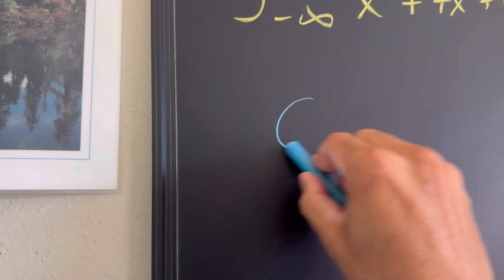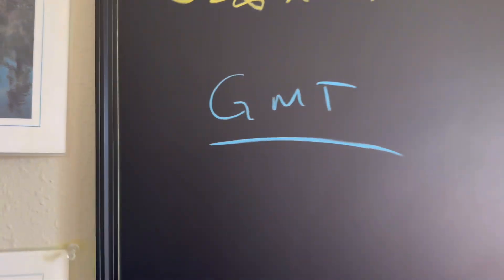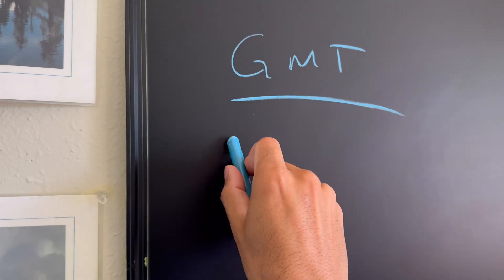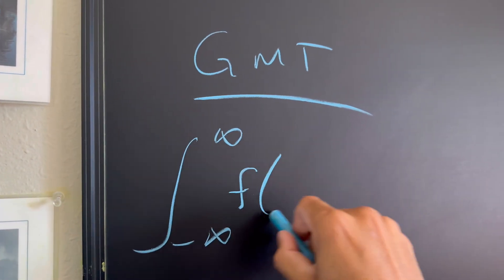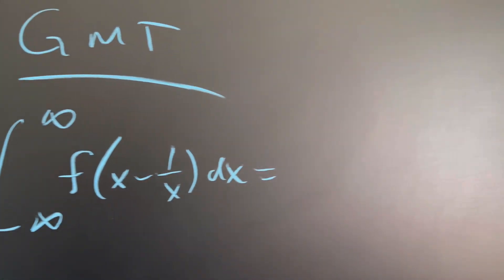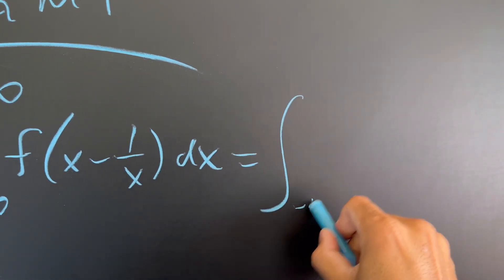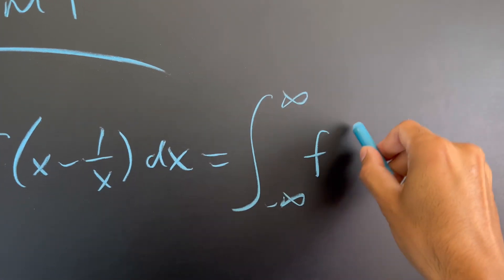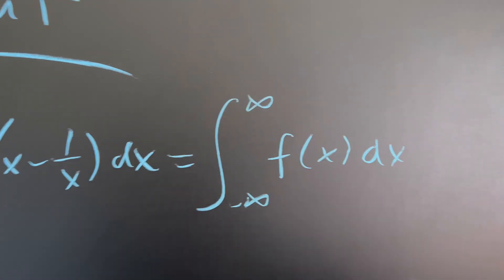So what is Glaser's Master Theorem? I'm just going to put GMT. This tells us that if you have an integral from negative infinity to infinity of f of x minus one over x with respect to x, then that is actually going to equal the integral from negative infinity to infinity of simply f of x with respect to x.